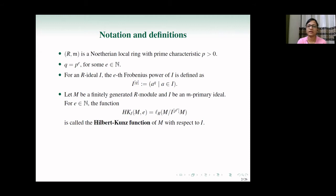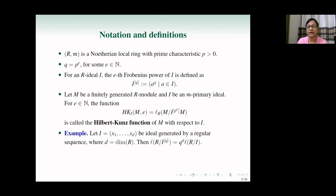Let's look at a few examples. The first is when I is generated by a regular sequence x_1, ..., x_d where d is the dimension. To compute the Hilbert-Kunz function of R with respect to I, we need the length of R over I^[q], which is the ideal generated by x_1^q, ..., x_d^q. Since these elements form a regular sequence, this ideal is also generated by a regular sequence, and the length turns out to be q^d times the length of R over I.